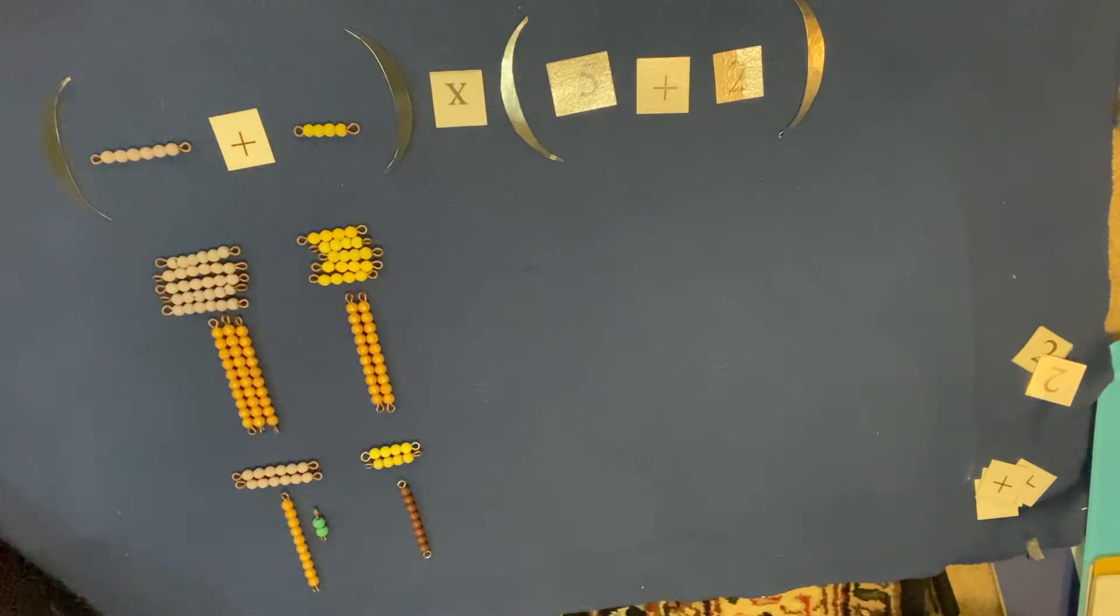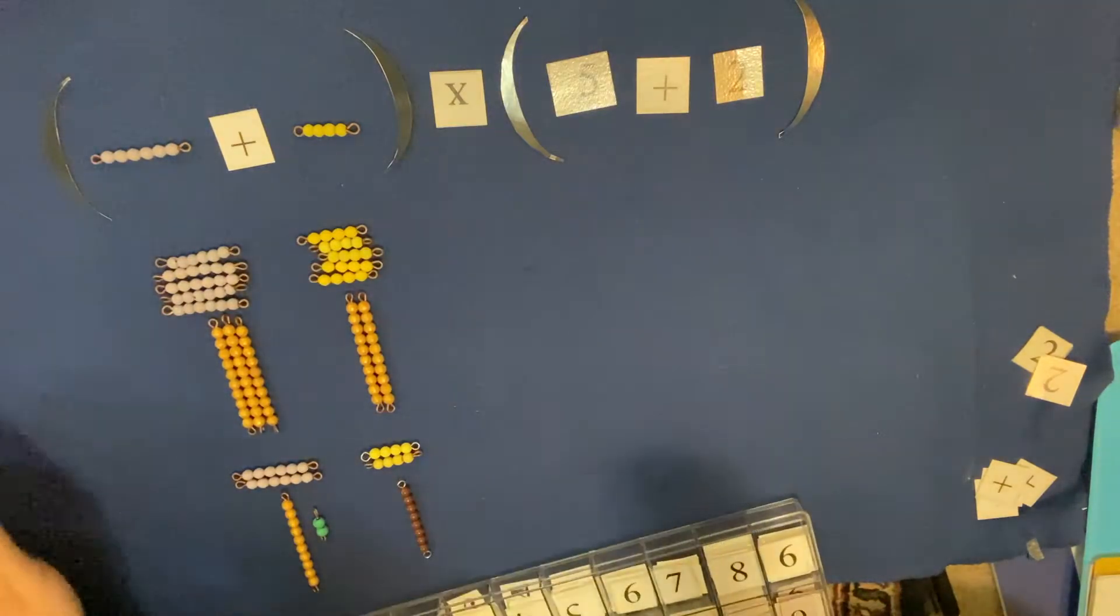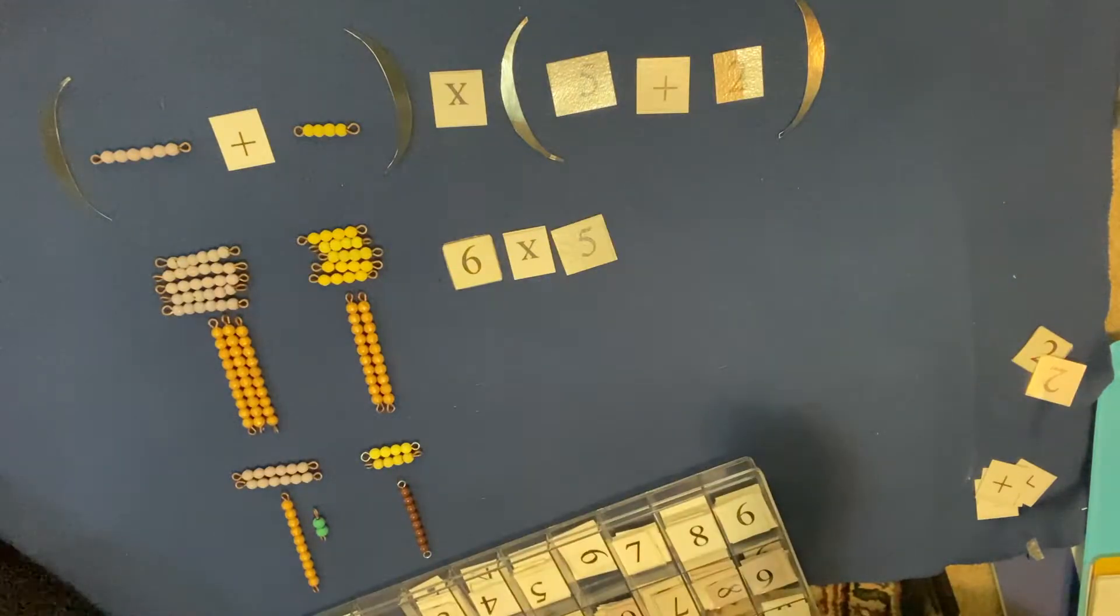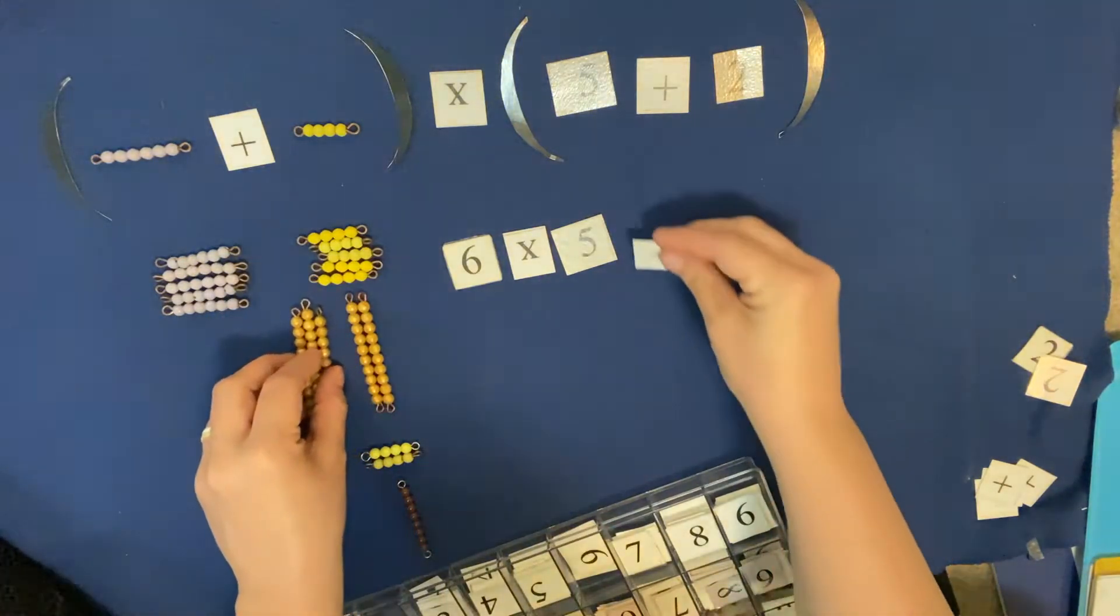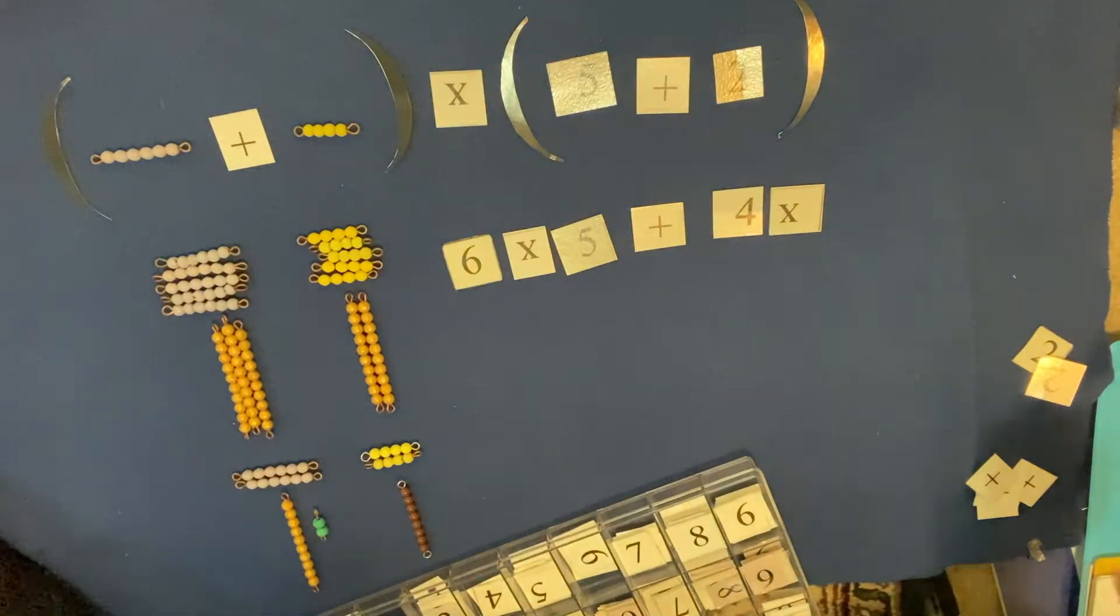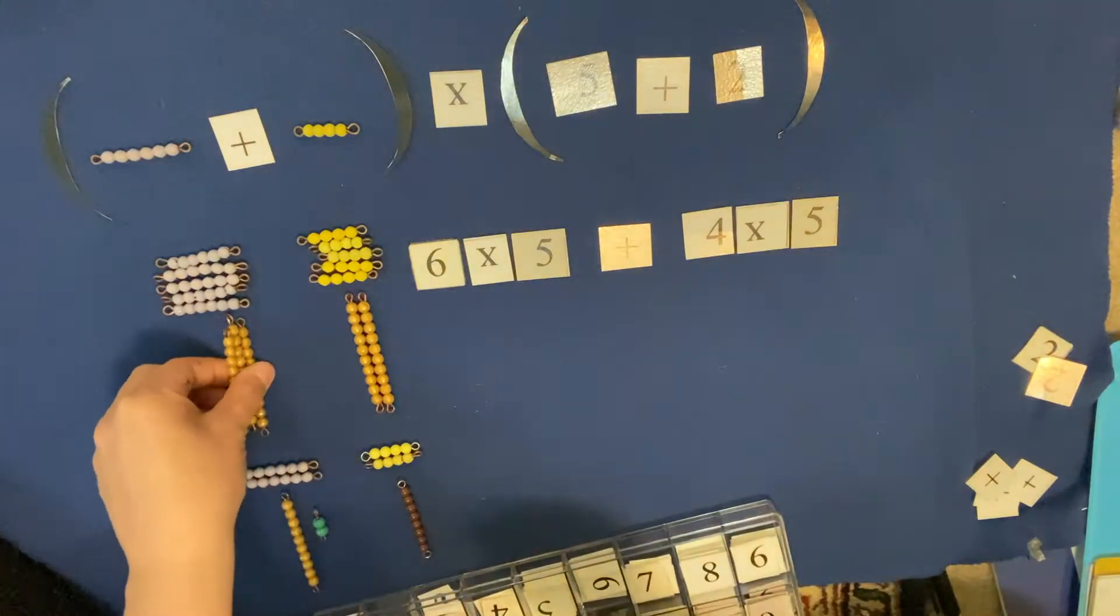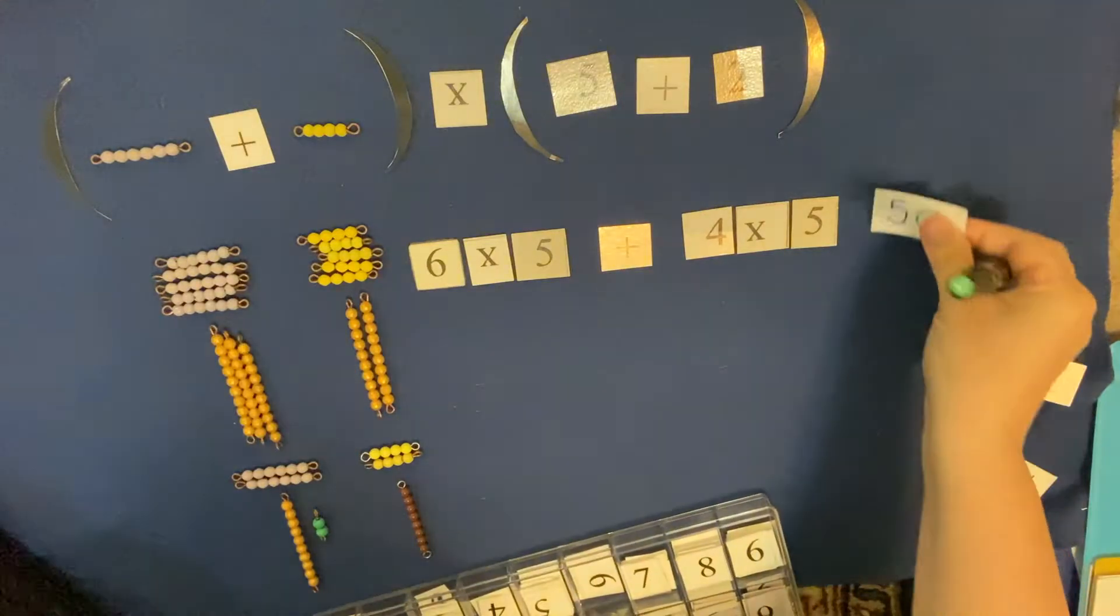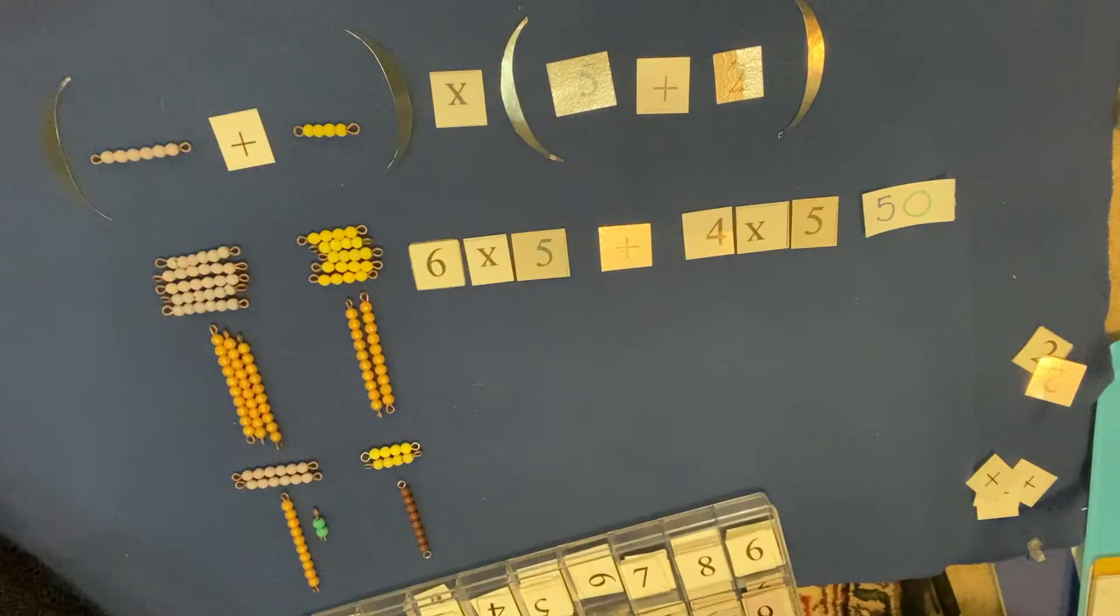All right, so what I want to do this time—this is very similar to what we did last time—but what I want to do this time is I want to go ahead and lay out cards for everything that we did. So we did, let me get out my number cards here, we did six times five. Whenever we have to find our answer we push this together, we get thirty. We're gonna add it to four times five.